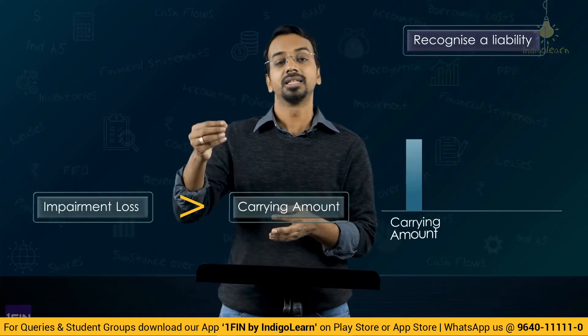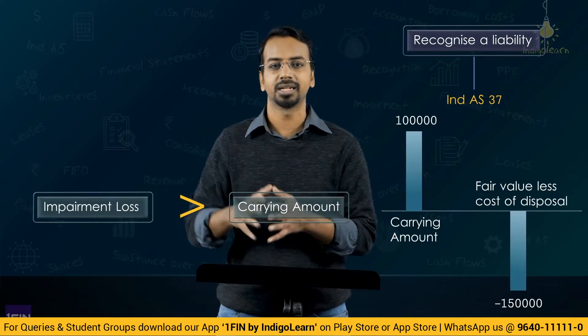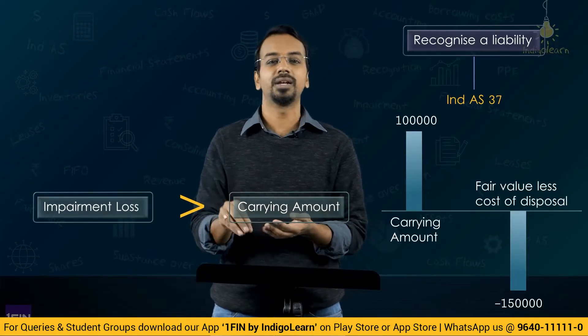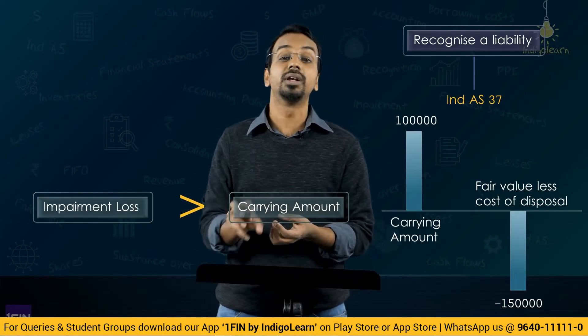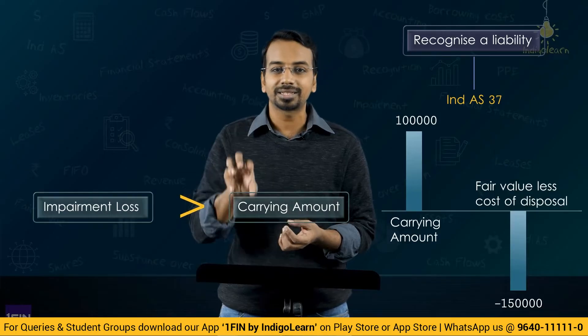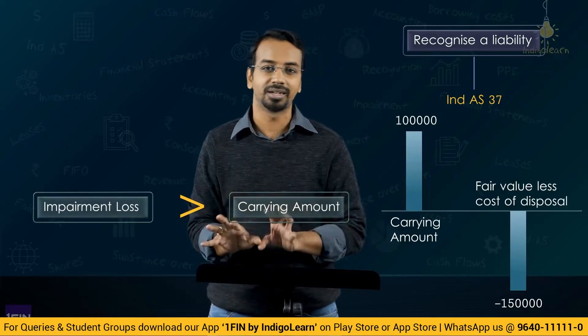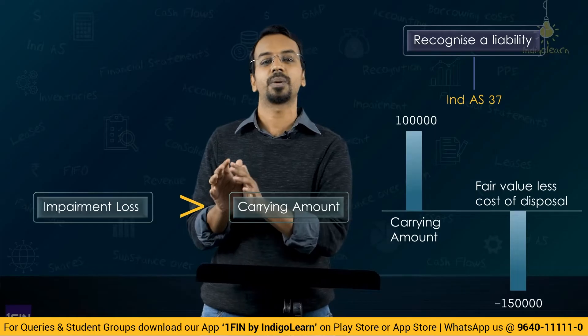Sometimes when testing for impairment, we realize that the impairment loss is greater than the carrying amount of that asset. This may be a case where there are associated liabilities related to disposal. In that case, you will recognize that extra liability only if it is permitted by IndAS 37, which we will understand separately.